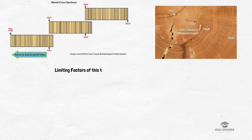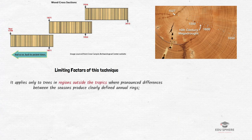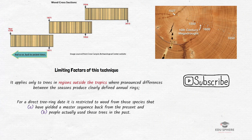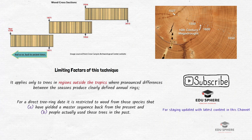What are some of the limiting factors of this technique? Unlike radiocarbon dating, dendrochronology is not a global dating method due to two basic limitations. It applies only to trees in regions outside the tropics where pronounced differences between the seasons produce clearly defined annual rings. Secondly, for direct tree ring dating, it is restricted to wood from species that have yielded a master sequence back from the present and that people actually used in the past. Despite these qualifications, dendrochronology has become a major dating technique alongside radiocarbon dating for trees found in temperate and arid lands.